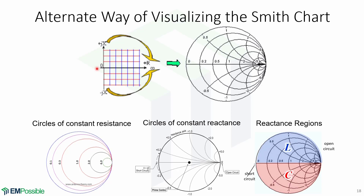Another way of visualizing the Smith chart is knowing that it is a bilinear transformation of the complex impedance plane, in which the horizontal axis corresponds to the real part of the impedance and the vertical axis corresponds to the imaginary part. The bilinear transformation folds the plane onto itself so that lines become circles, transforming into what we call the Smith chart.